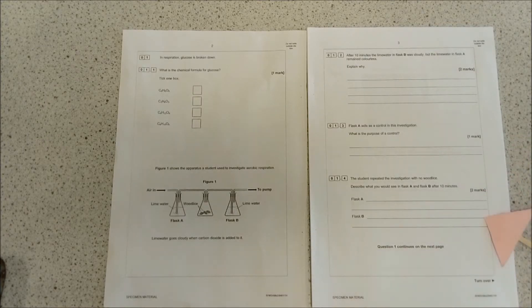Moving on, the student repeated the investigation with no wood lice. Describe what you would expect to see in flask A and flask B after 10 minutes. If there's no wood lice, there's no respiration, so there's going to be no excess carbon dioxide. This is one where people slip up on because you almost think it can't be as simple as it is.